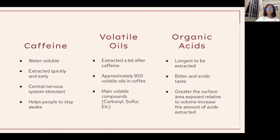Caffeine is water-soluble and is extracted quickly and early. It is also a central nervous system stimulant which helps people to stay awake. Volatile oils are extracted a bit after caffeine, and there are approximately 850 volatile oils in coffee. The main volatile compounds include carbonyl and sulphur. Organic acids take the longest time to be extracted and they usually have a bitter and acidic taste. The greater the surface area of the coffee ground exposed, the more organic acid is extracted into the coffee.